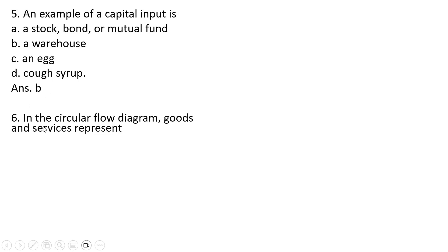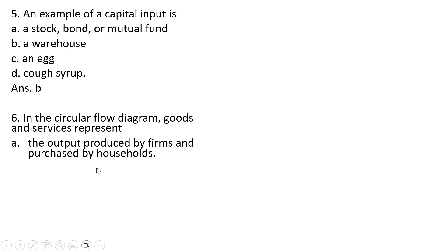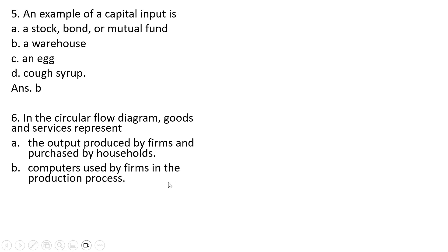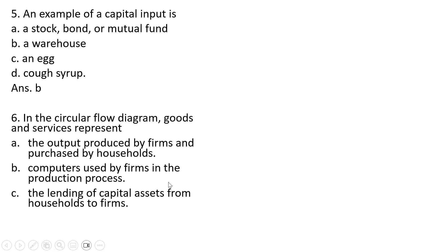Question 6: In the circular flow diagram, goods and services represent the output produced by firms and purchased by households. That is correct. Answer choice A.